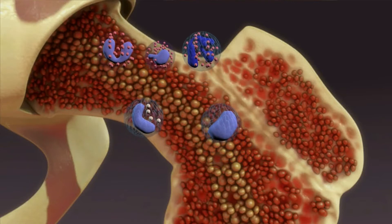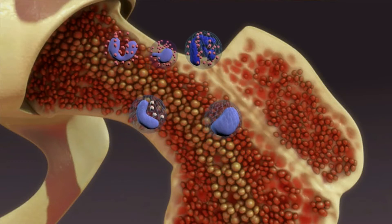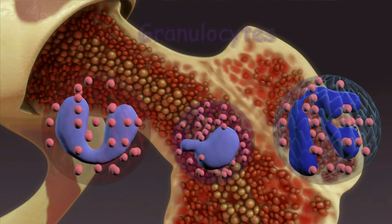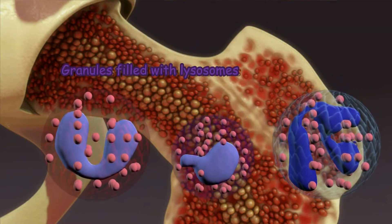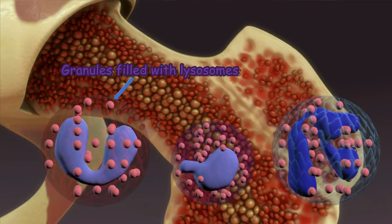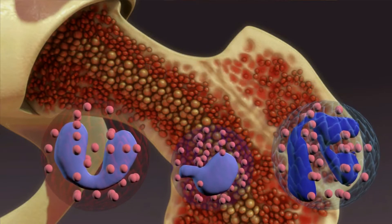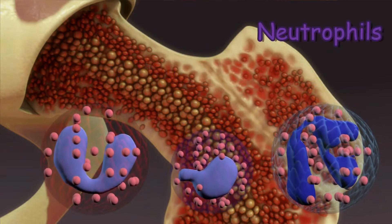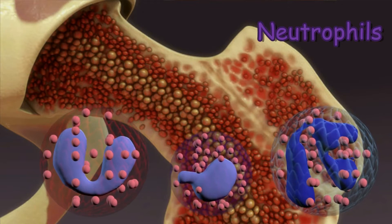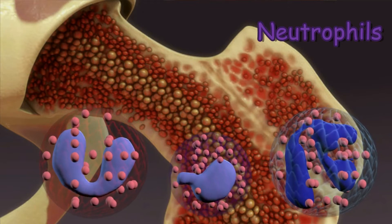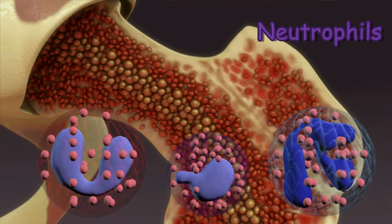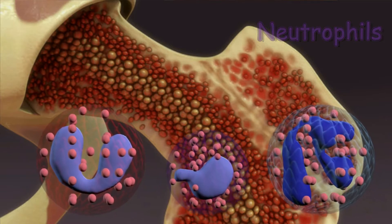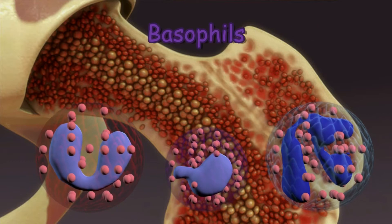One group of cells called granulocytes are named this way because they contain granules filled with enzymes. This group includes neutrophils, which kill and digest bacteria and fungi. They are the most numerous type of white blood cell and the first line of defense when infection strikes.